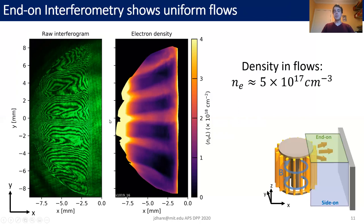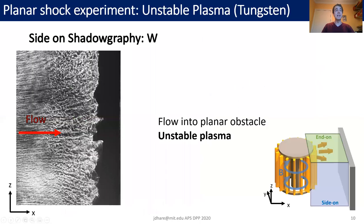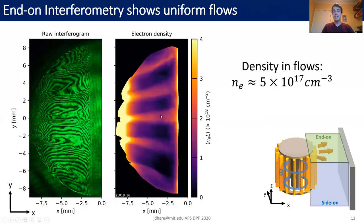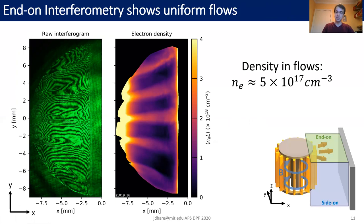What's remarkable about this end-on interferometry is how little structure we see here compared to the side-on shadowgraphy. In the shadowgraphy we see an awful lot of structure, mostly arranged in the vertical direction. This diagnostic integrates in the vertical direction, which may wash out the density perturbations, or it may be that there aren't many density perturbations in this plane and the structure of the instability is mostly in the z direction. From these interferograms we get an average density of around 5×10¹⁷ electrons per cubic centimeter, which we'll use later to calculate several important dimensionless parameters.